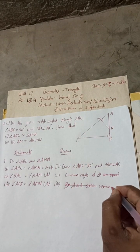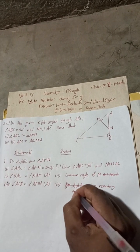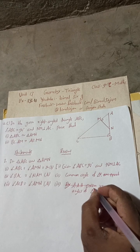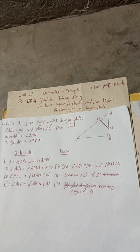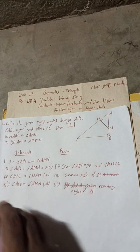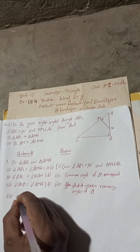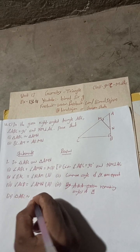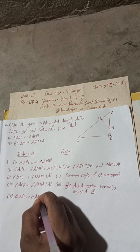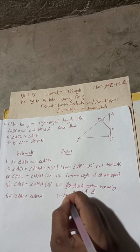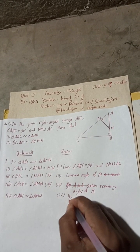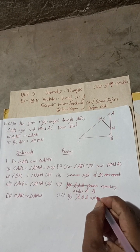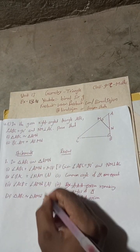The remaining angles of the triangles are also equal. Therefore, by the angle-angle-angle (AAA) axiom, triangle ABC is similar to triangle AMN. This is proved.